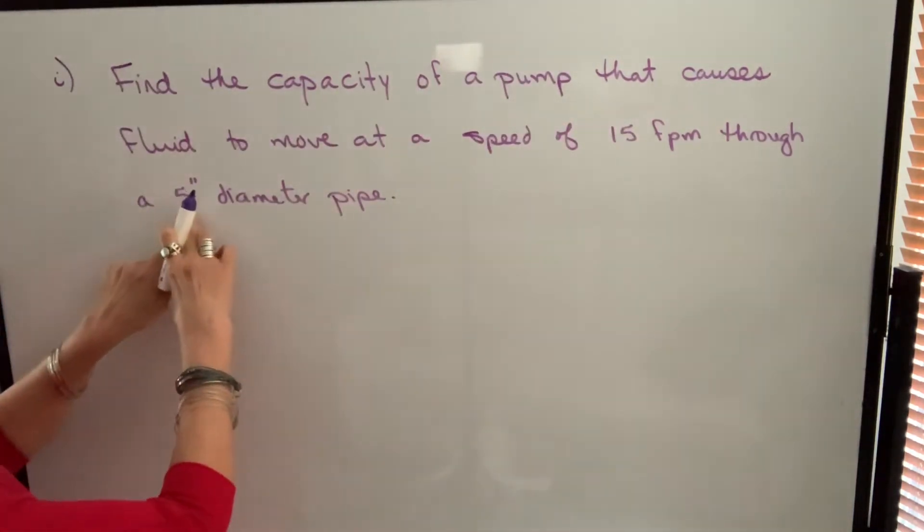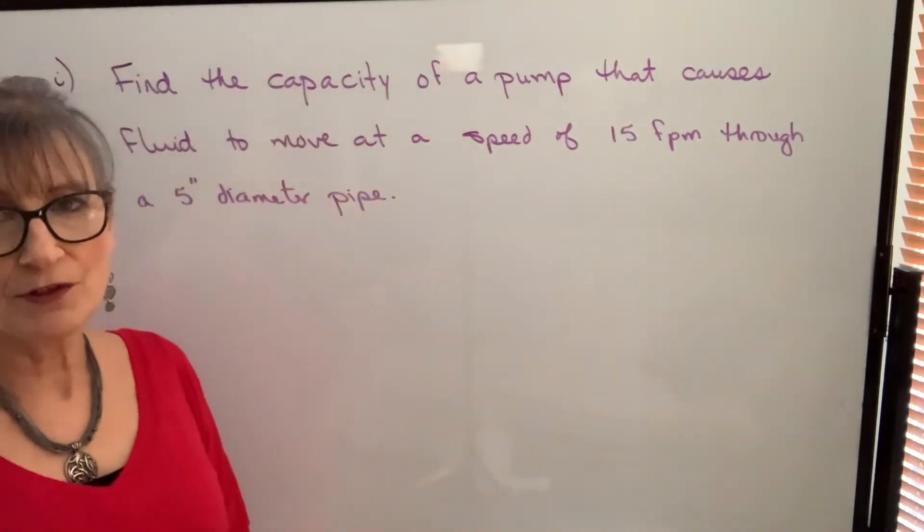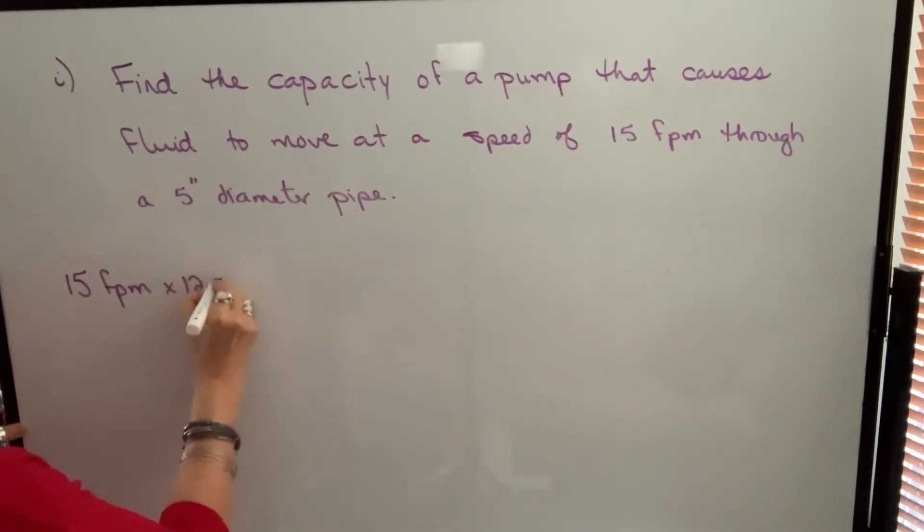We have a problem because this is in inches and this is in feet. So we need to change everything to inches. So 15 feet per minute, if we multiply by 12, that gives us 180 inches per minute.